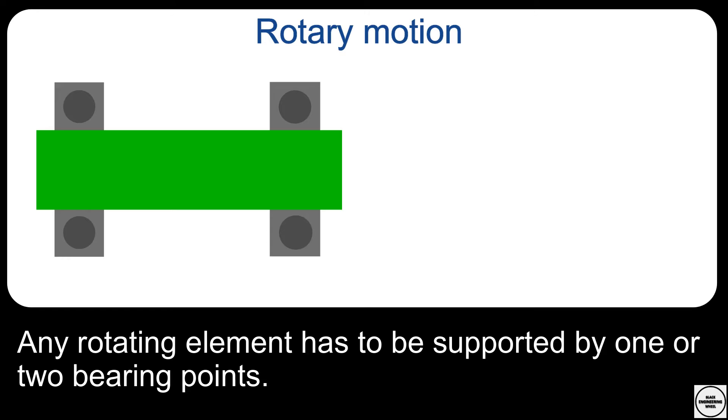And then you have the section of the shaft where the rotation is needed for the function. For example, there is a gear mounted on it.